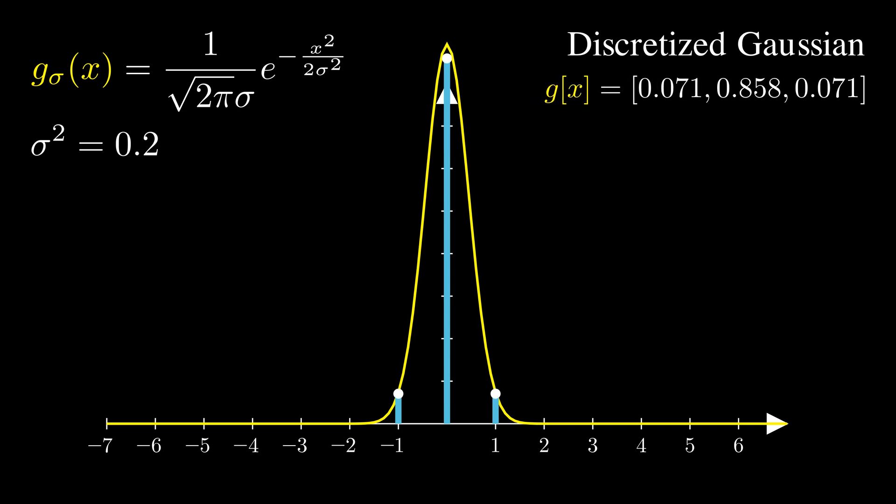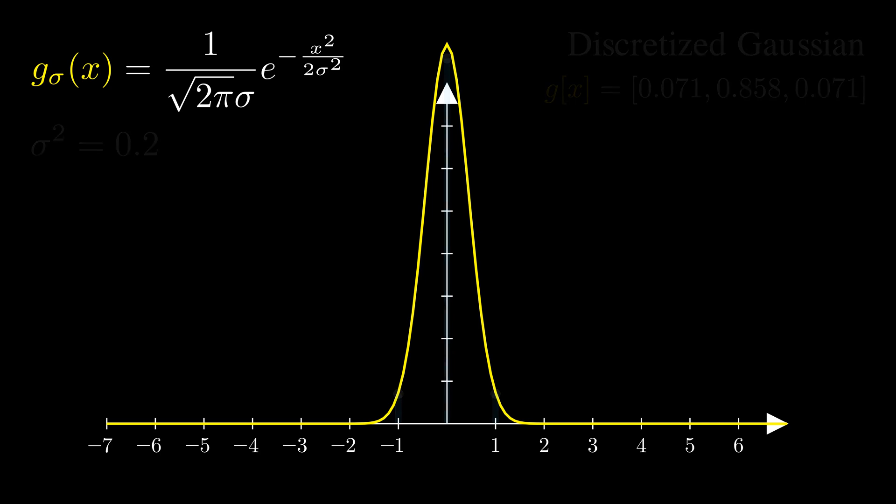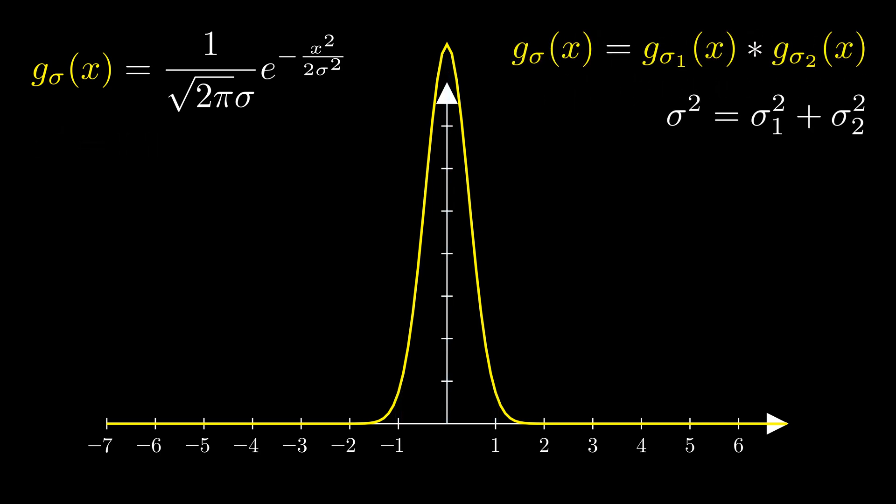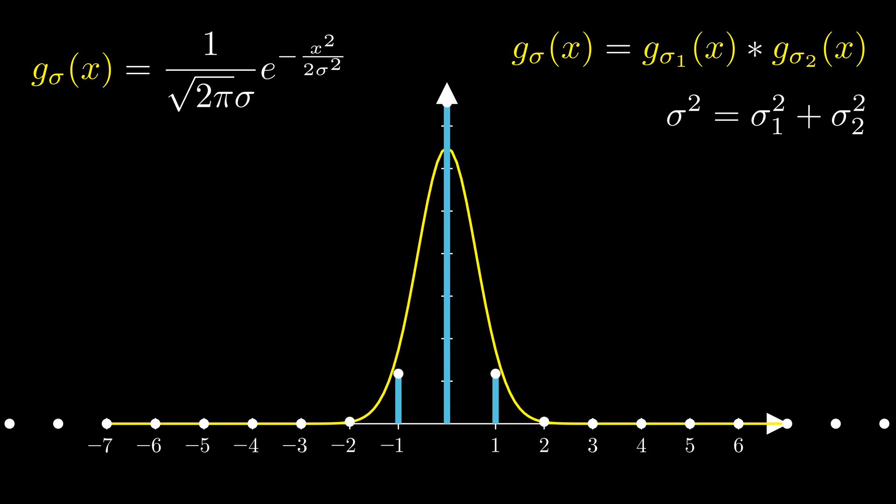This works fine as is. But very often we want to construct a progressively blurred output by iteratively applying the Gaussian filter. In the continuous domain, there is a nice property. Convolving two Gaussian functions gives another Gaussian with a larger variance. Unfortunately, this doesn't hold in the discrete case. When we iteratively convolve the discretized Gaussian, we end up with a kernel that deviates from the true Gaussian.